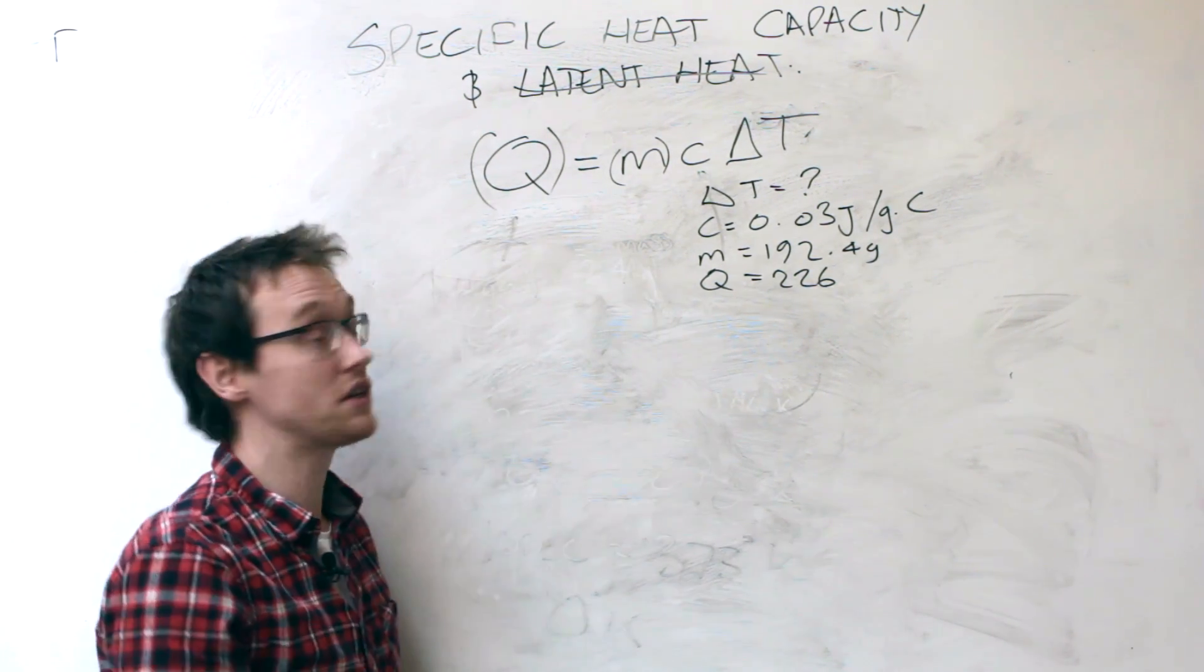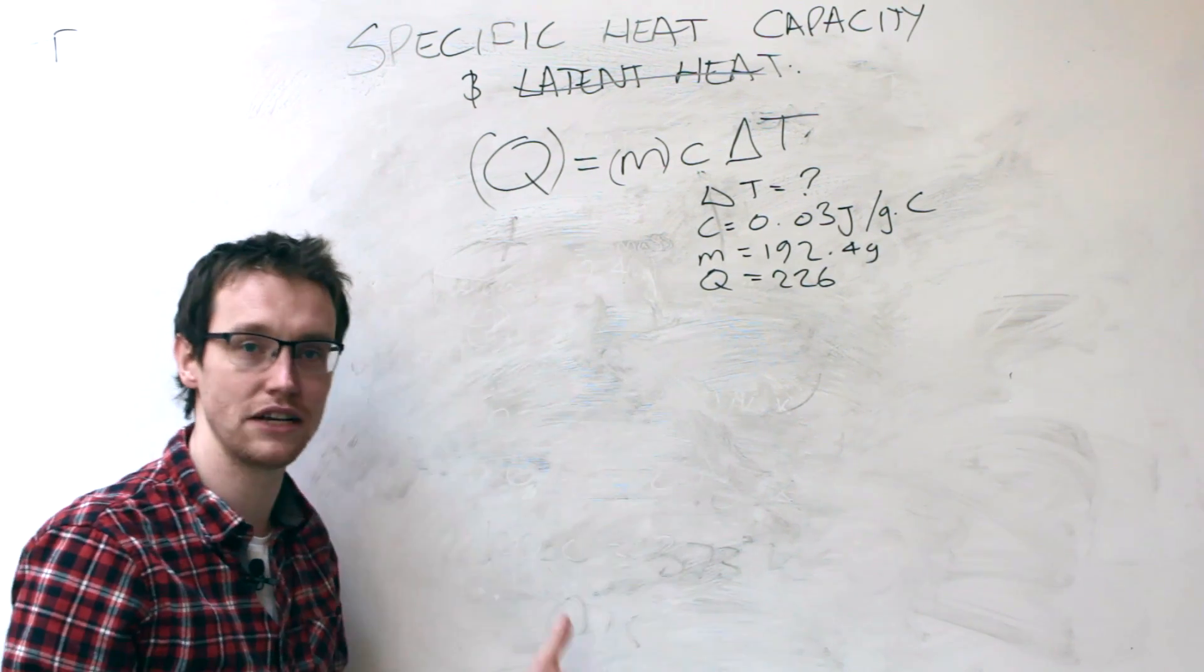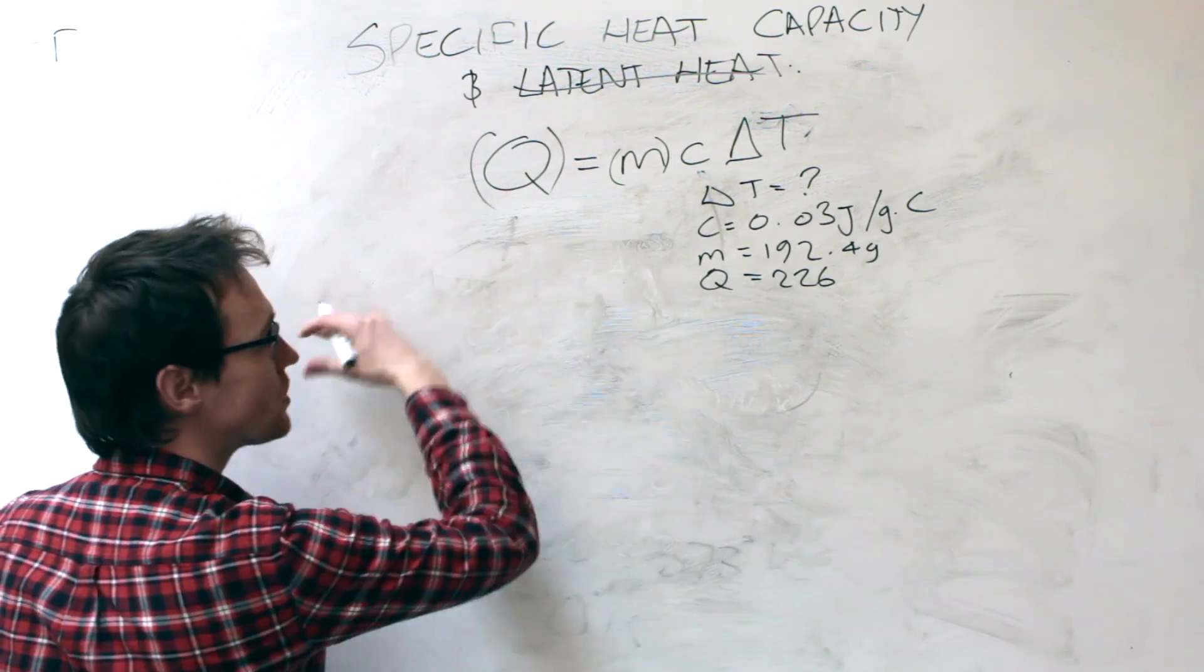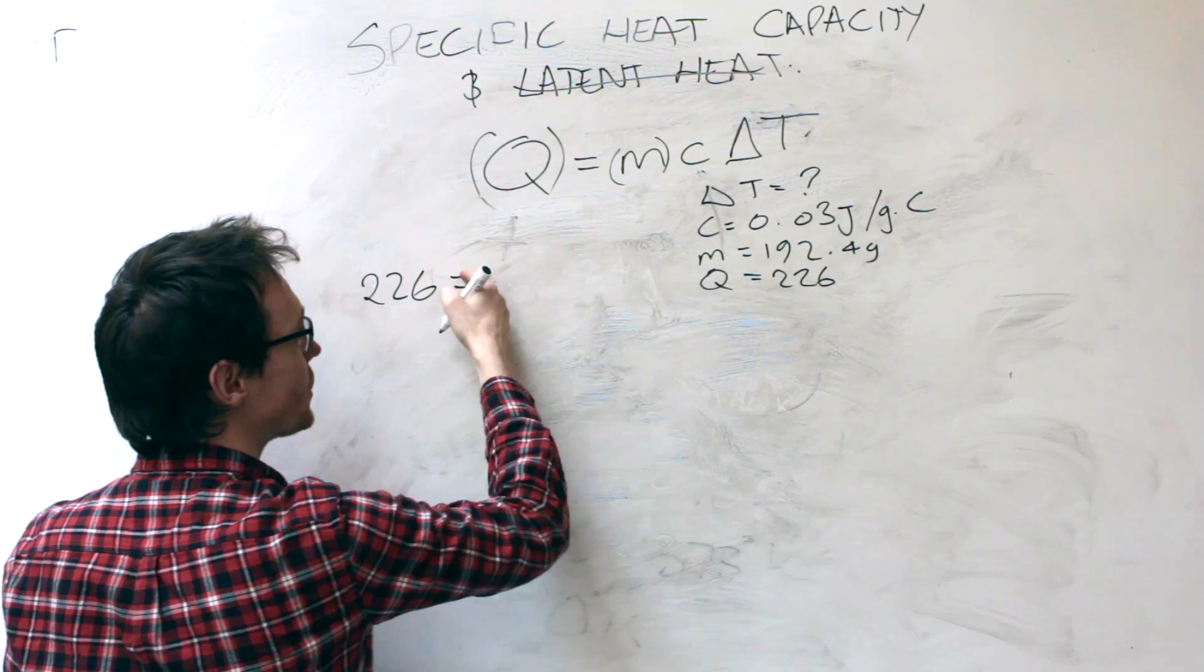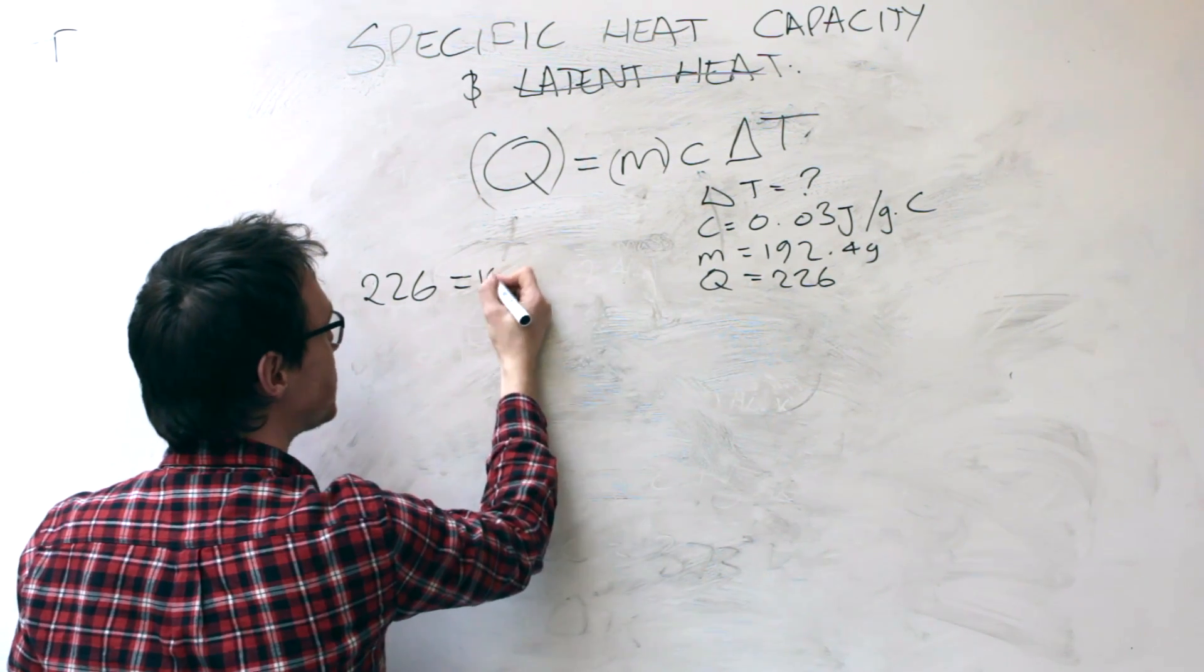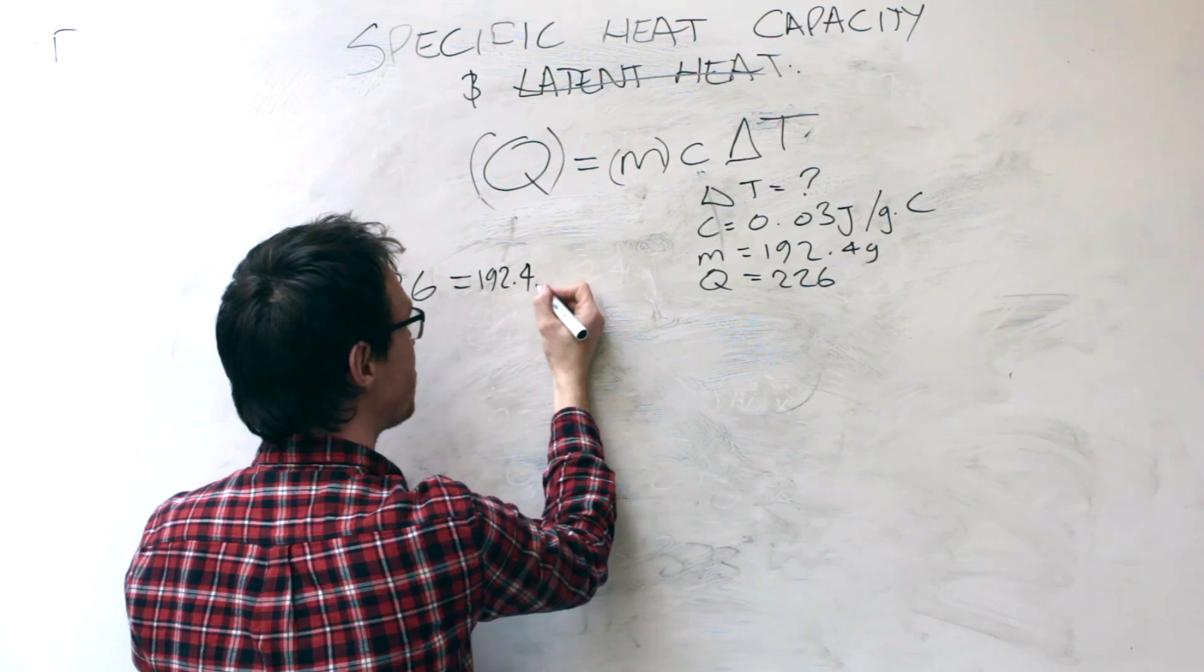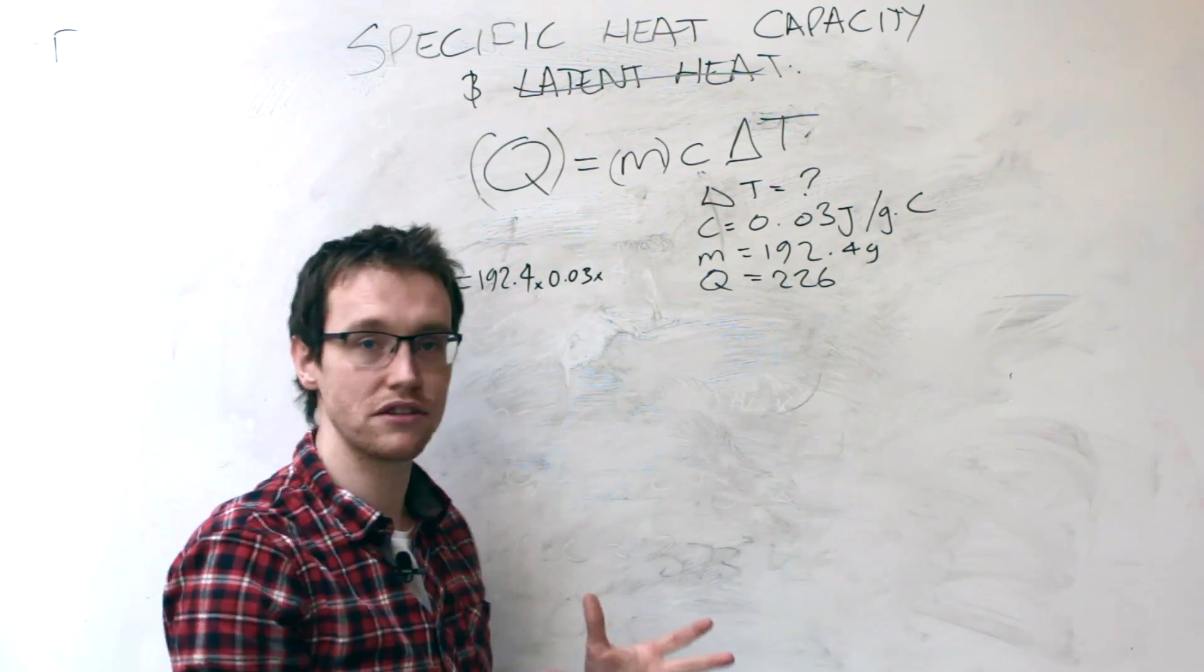Okay, so how hot did this thing actually get? Well, we've done what is good practice for an engineering theory question: stated the formula, stated the variables. Let's just substitute in those numbers. So Q is going to be 226, is equal to the mass 192.4, times c, 0.03, times delta T - that's the thing that we don't know.